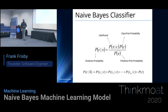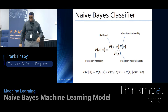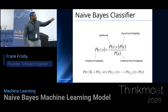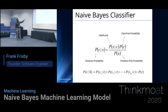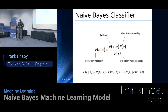There is a posterior, which is calculated; there is the likelihood calculation; the class posterior probability; and the predictor. Typically it's three parts — broken down into the prior, the likelihood, and the posterior.